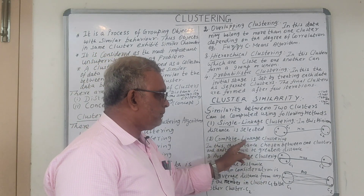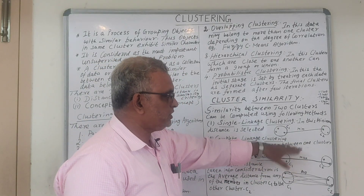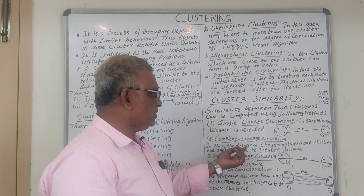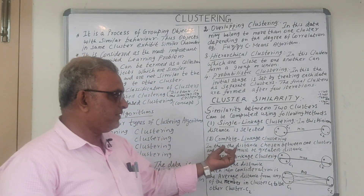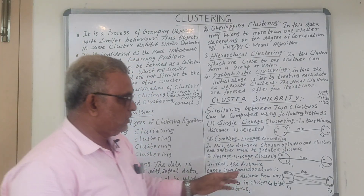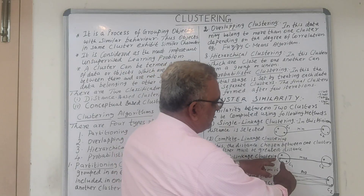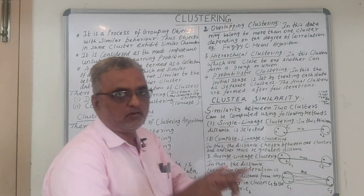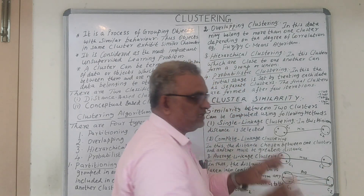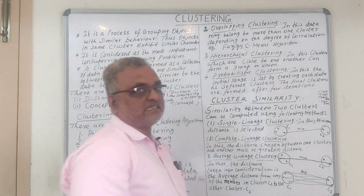Number two is complete linkage clustering, in which instead of the minimum distance, we consider the maximum distance — just the opposite of single linkage. The distance chosen between one cluster and another must be the greatest distance. So if you compare cluster one and cluster two, the two points that are farthest apart have the maximum distance, and only that maximum distance is selected.